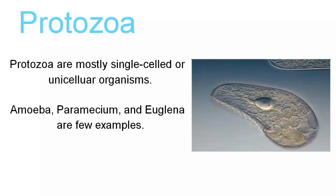Protozoa, like bacteria, are mostly single-celled or unicellular organisms. Amoeba, paramecium, and euglena are a few examples of protozoans. Euglena shows the features of both plants and animals. Like bacteria, protozoa also multiply by the process of fission.